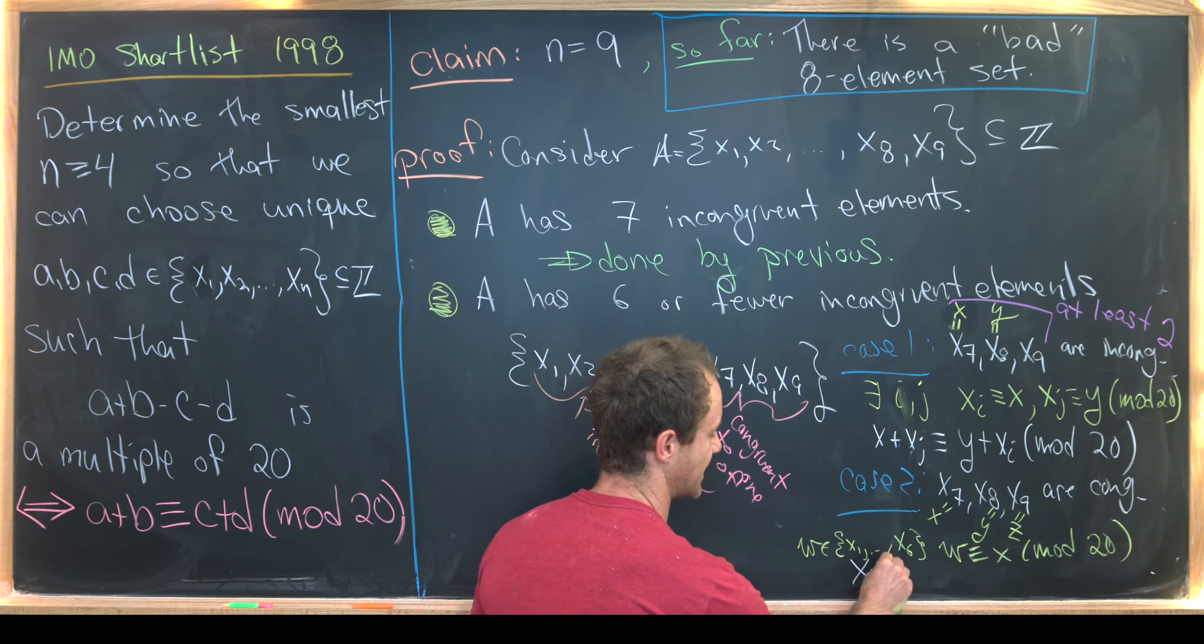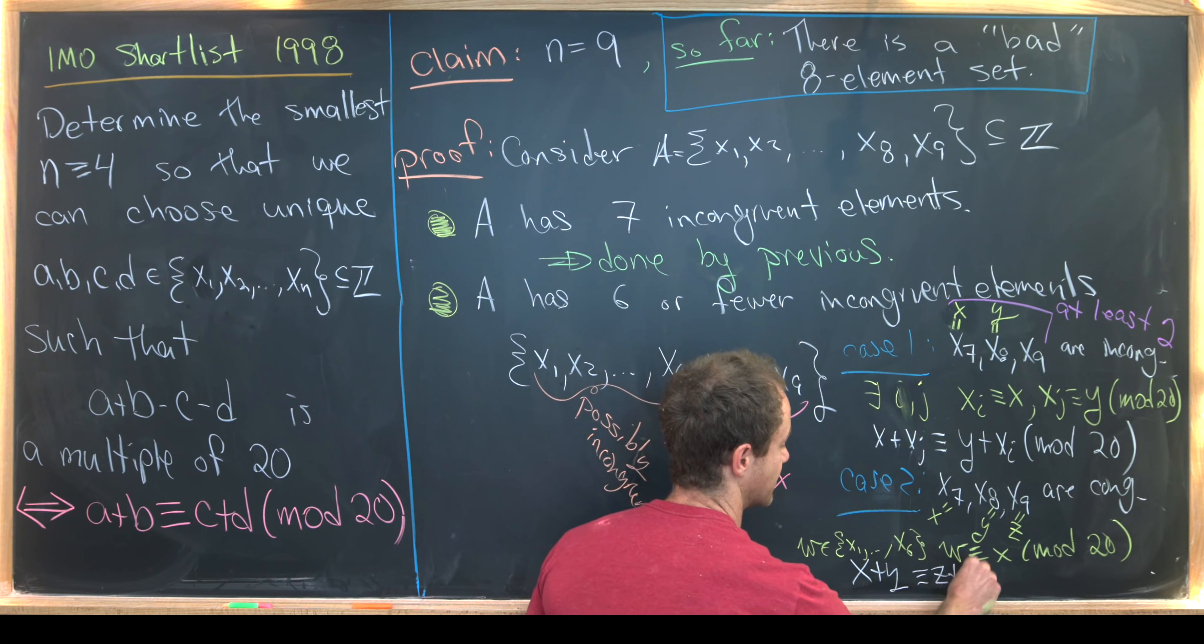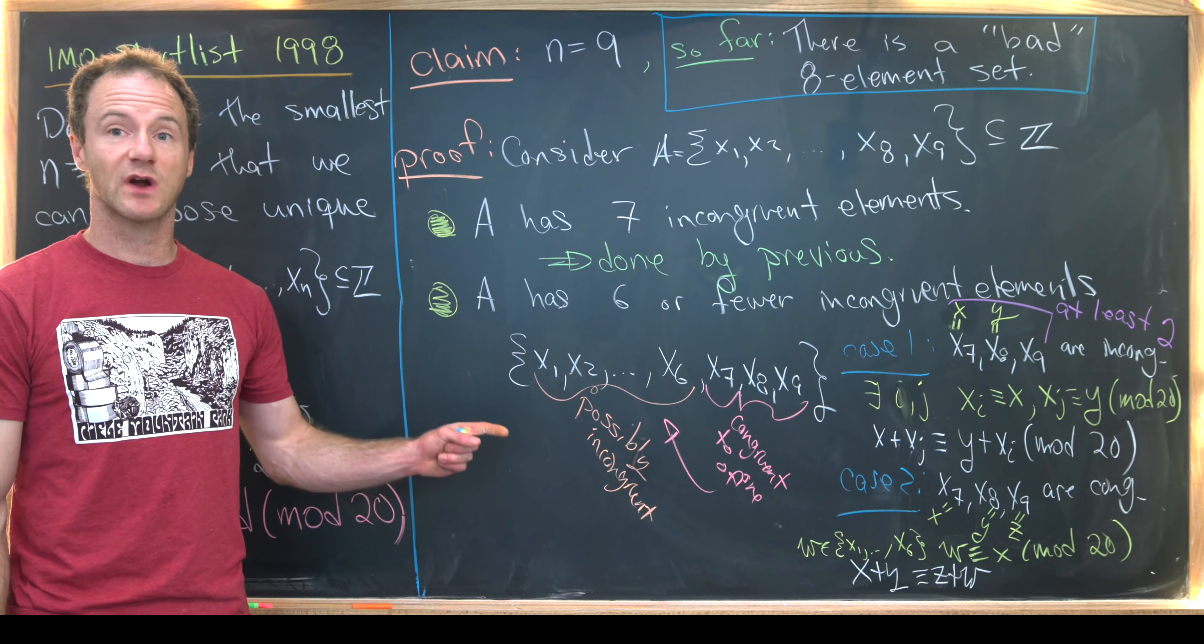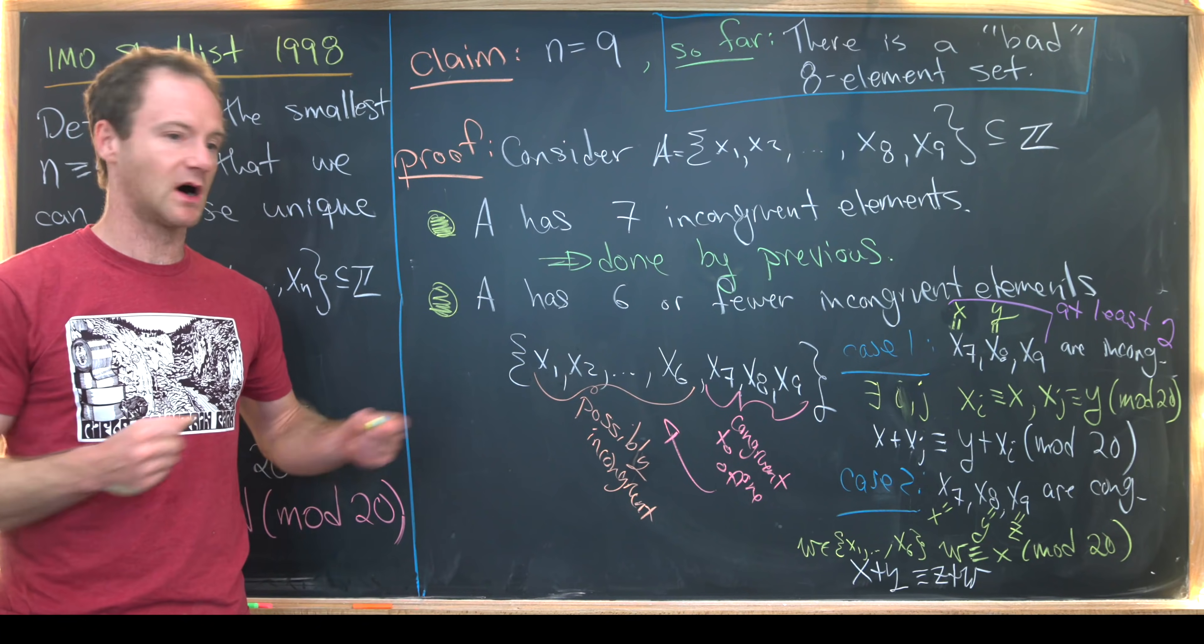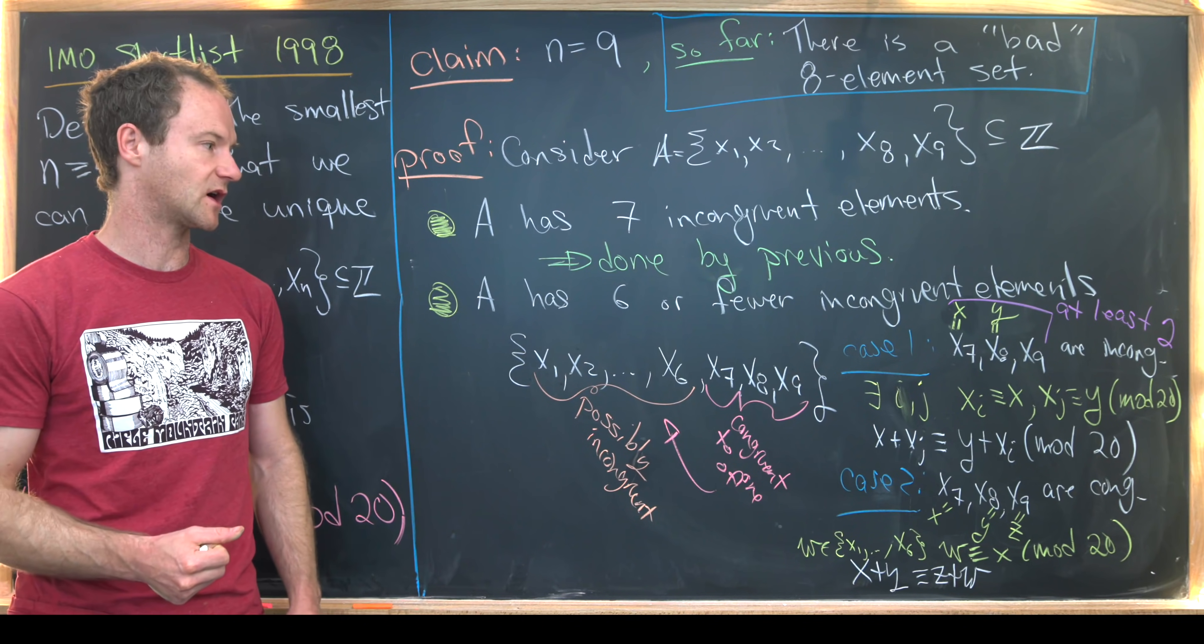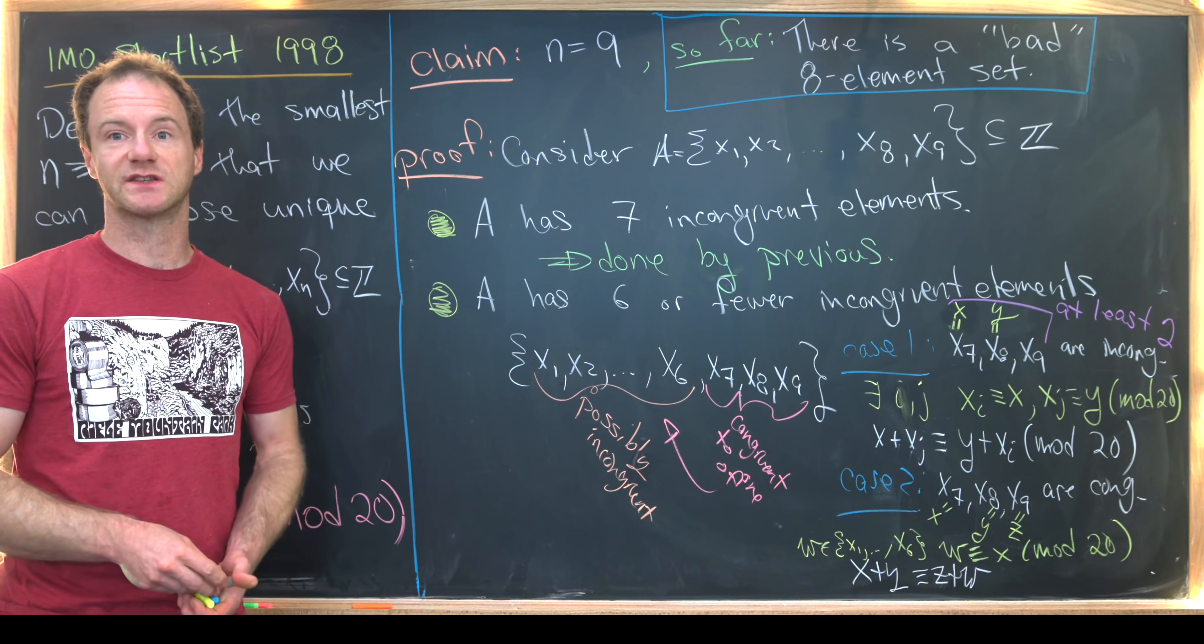But if these are all the same, then very clearly we have x plus y is congruent to z plus w mod 20. Because we're adding two copies of the same thing mod 20 on either side of the congruence. Okay, that's a good place to stop.